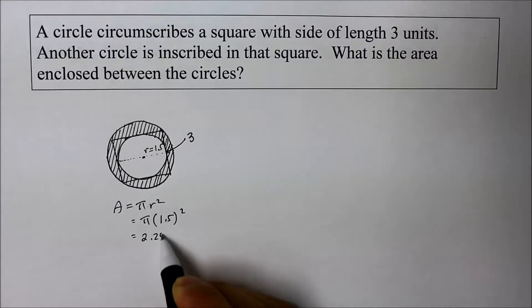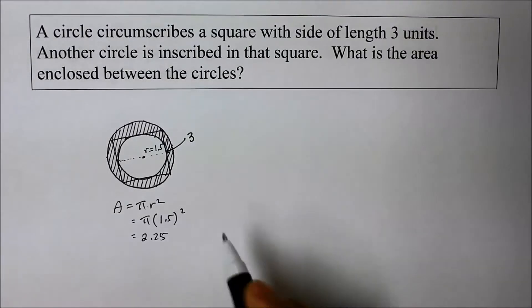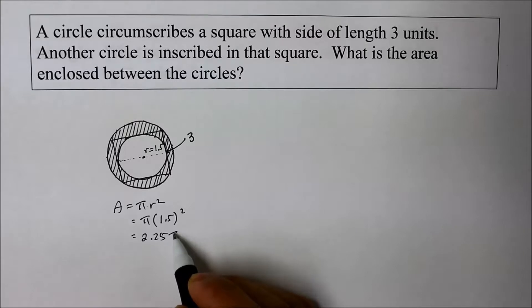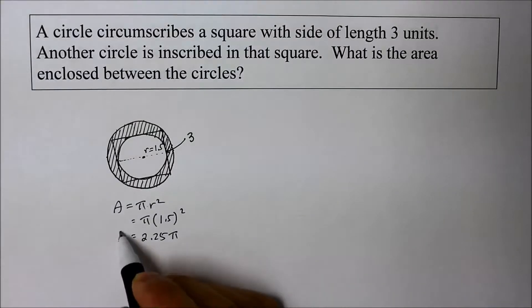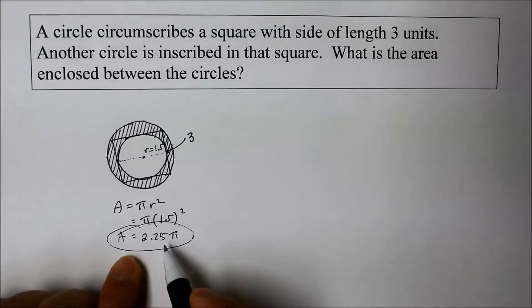That's pi times 1.5 squared. So that's 2.25 pi units squared. That's the area of the small circle.